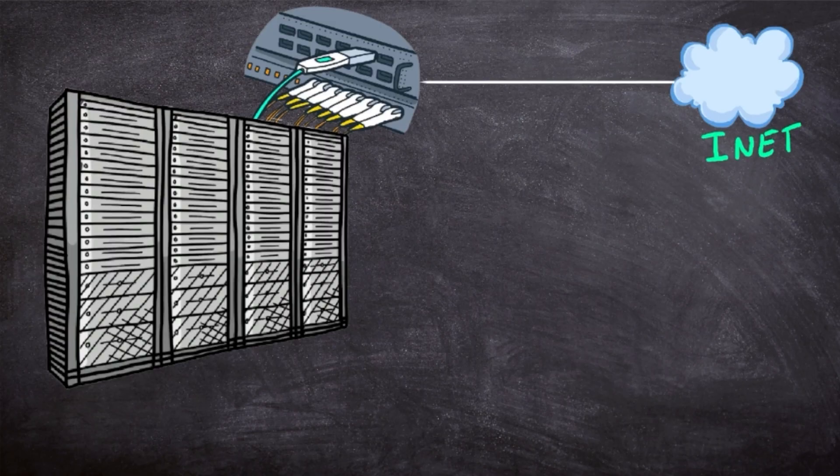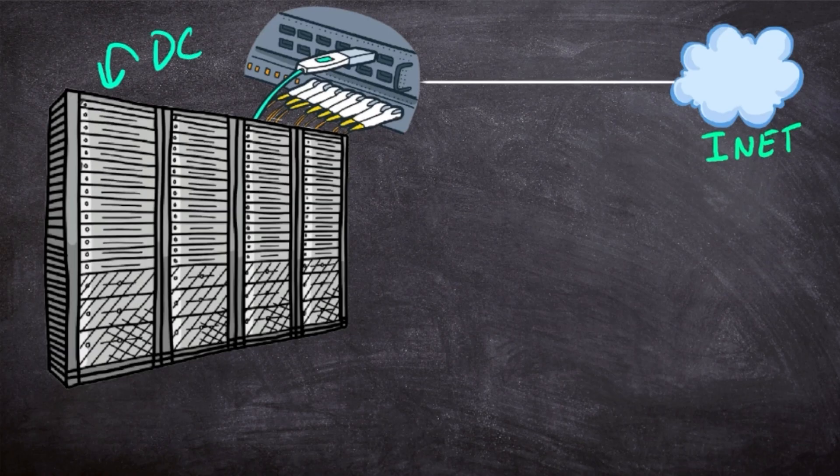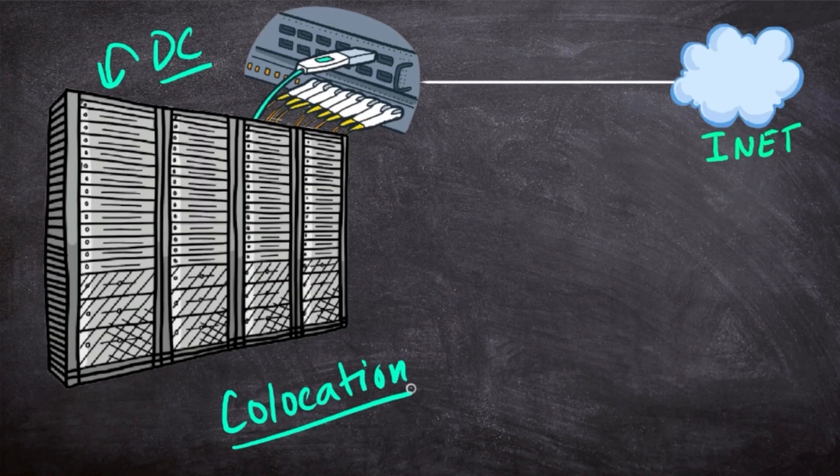So how do we take that concept that we just saw with the apartment complex and move it over here to this data center that we're looking at? So let's say that this is a co-location facility here. Now for those of you who are not familiar with the term, we just usually call it a co-lo. This is basically a really simple concept. It's a data center for rent.